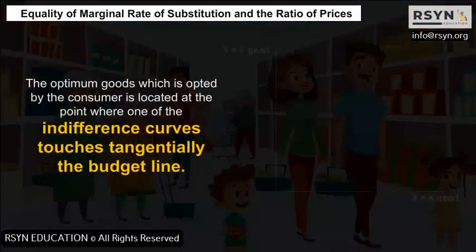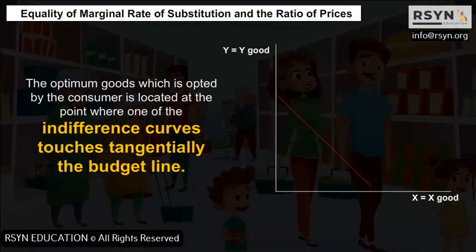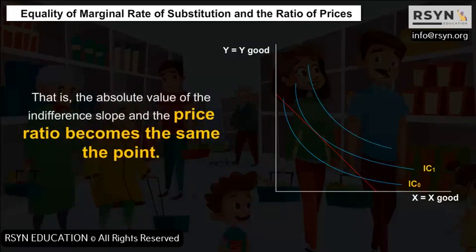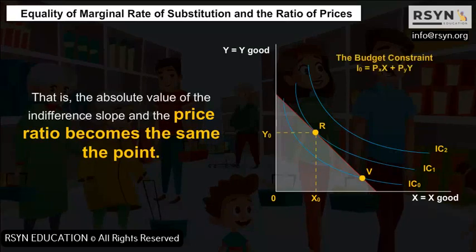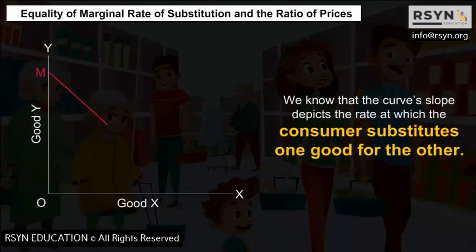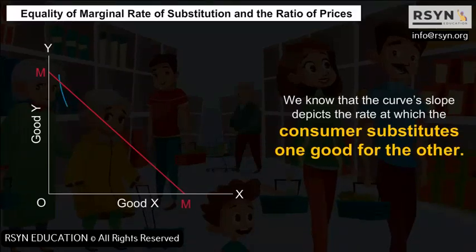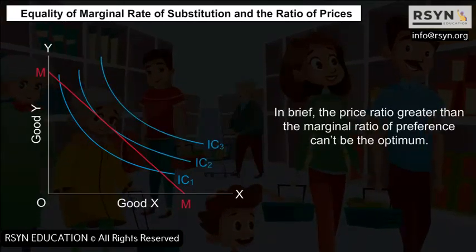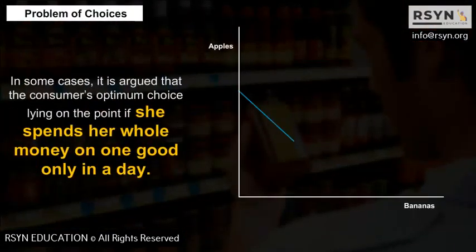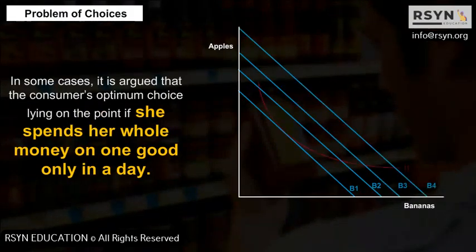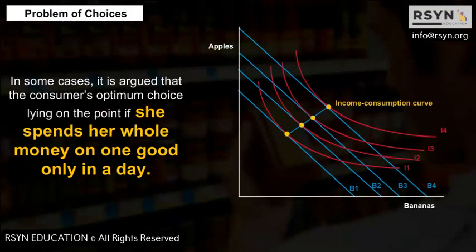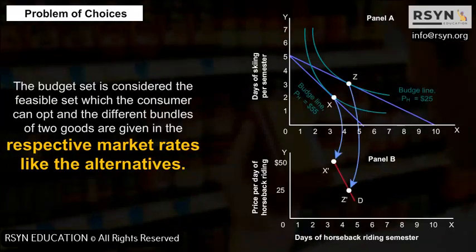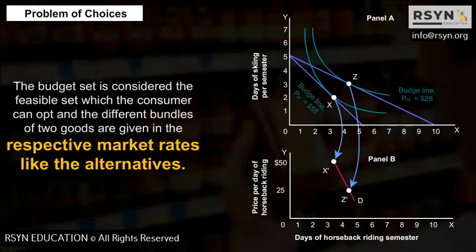Equality of Marginal Rate of Substitution and the Ratio of Prices: The optimum bundle chosen by the consumer is located at the point where one of the indifference curves touches the budget line tangentially — that is, where the absolute value of the indifference curve slope and the price ratio become the same. The price ratio greater than the marginal ratio of preference cannot be the optimum. In some cases, the consumer's optimum choice may lie at a corner point where she spends all her income on one good only.